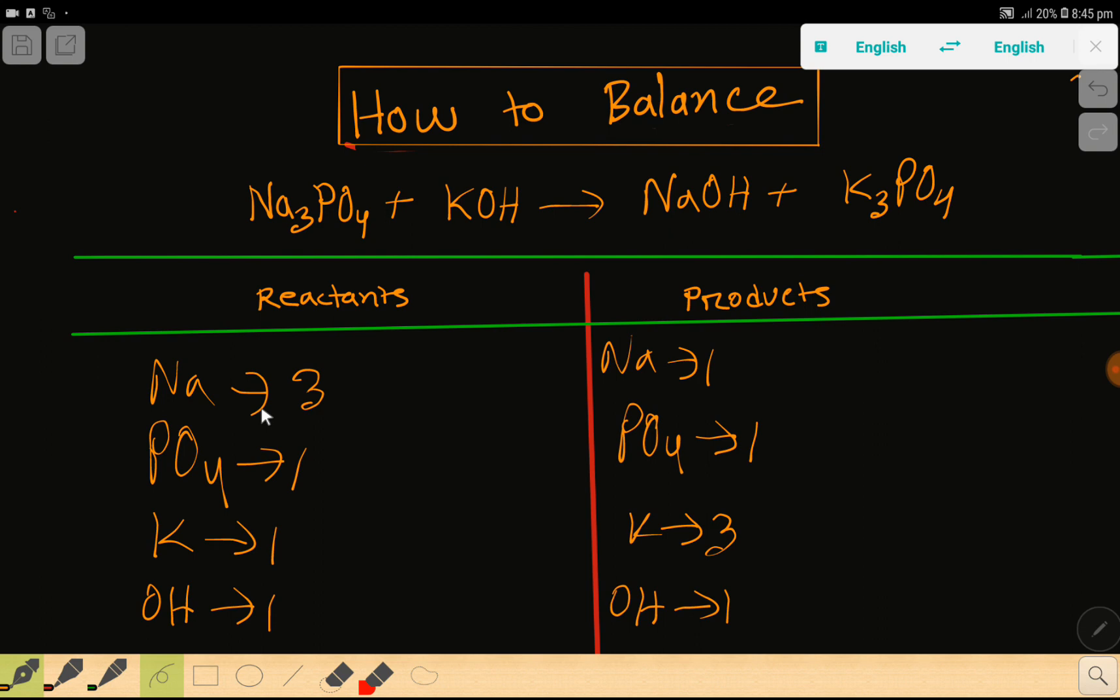To balance this reaction means we have to balance the number of sodium, phosphate, potassium and hydroxide from both sides of this reaction. So look here, sodium is 3 but here 1. So to balance the sodium what can you do? I can multiply here by 3. That gives me 3.